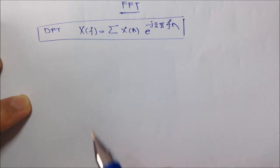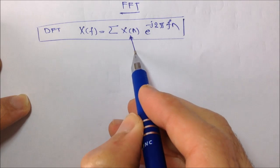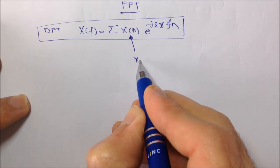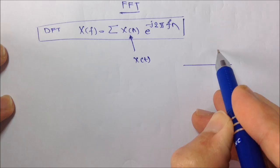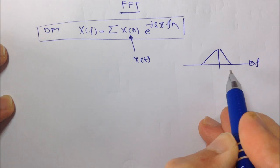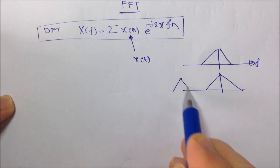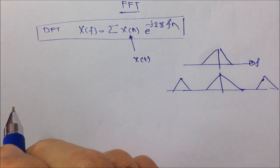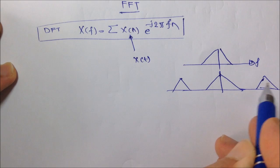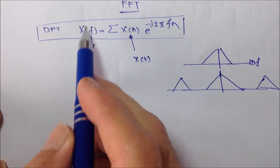From the DTFT video, x of n was originally a continuous signal x of t before we sampled it, and it had a spectrum. Then we sampled it and got x of n, and the spectrum became periodic, given by x of f — but it remained continuous. So this is a continuous signal which we cannot easily plot using a computer, and so we have to sample f.